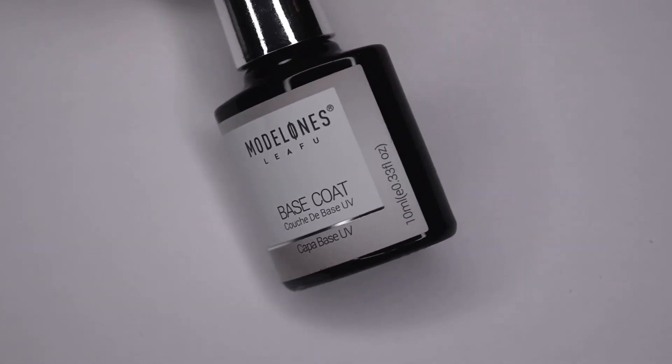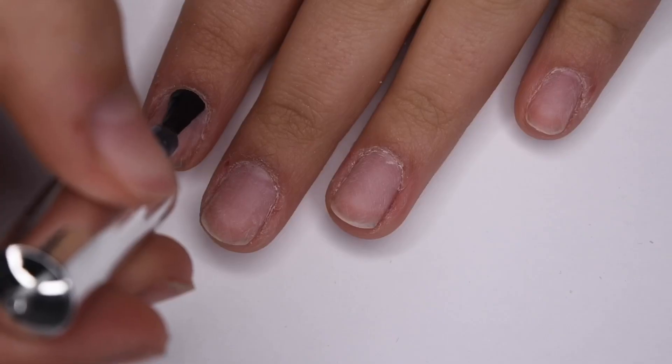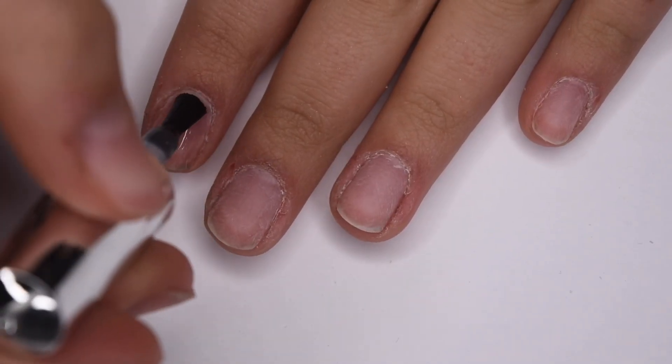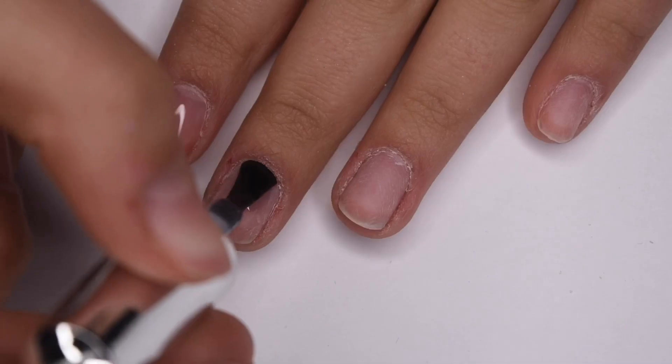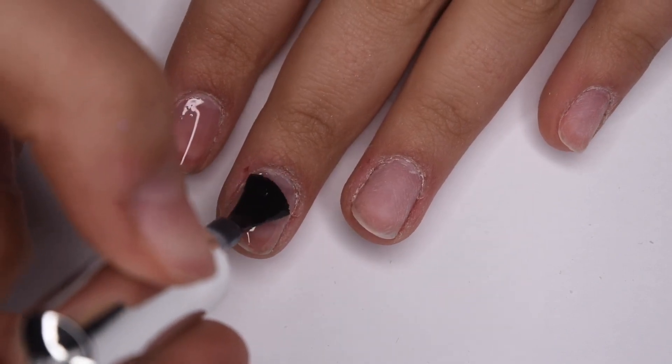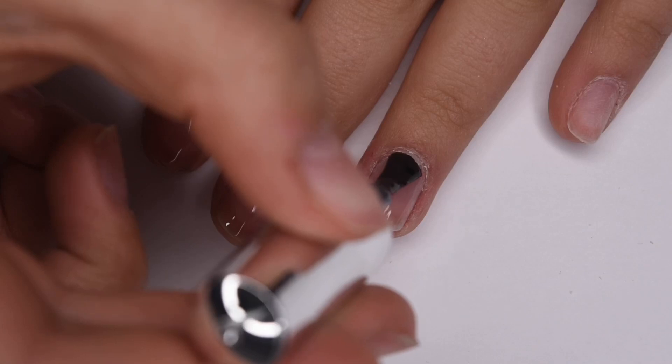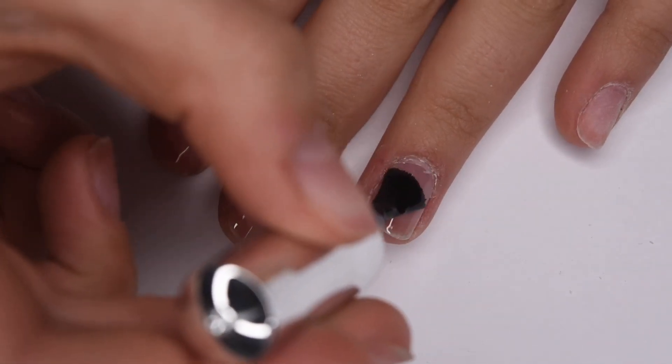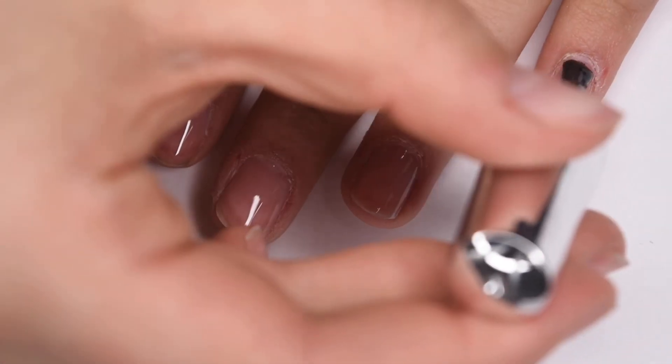And now I'm going to start with the application. So with the Model 1's gel base coat, I'm going to apply a thin, even layer to my natural nails. And I'm going to do this so that the polygel has something to stick onto. Now, you want to apply this base coat onto your clean natural nails. So I recommend either cleansing them with alcohol or applying a dehydrator before this step. And after I have a nice, even application of the gel, I'm going to cure for 30 seconds.